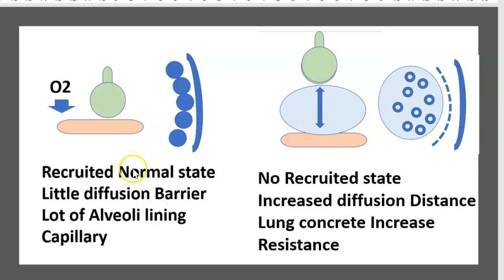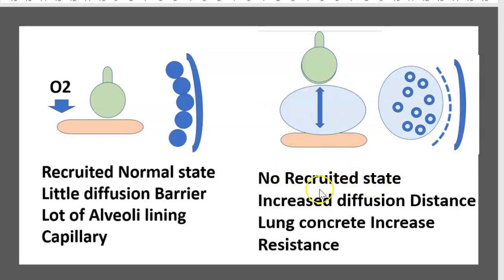The last concept is about recruitment. In a recruited normal state, there is little diffusion barrier between the alveoli and capillary — this is the passage of oxygen. There is a small distance between alveoli and capillary. In the non-recruited state, there is an increased diffusion distance between the consolidated lung and capillary.